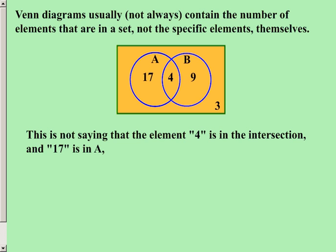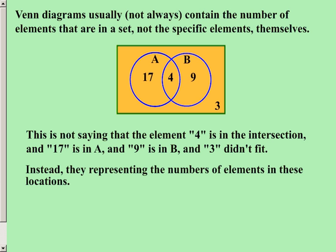You can see a 17 that is not in the intersection, but in set A. That is not saying that the number 17 is contained in set A. Similarly, we are not saying that 9 is in the set B, and we are not saying that the number 3 did not fit into either set A or set B.